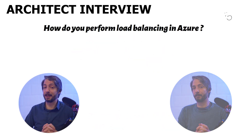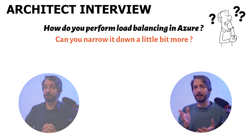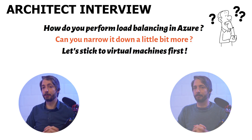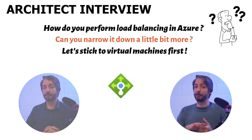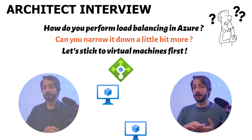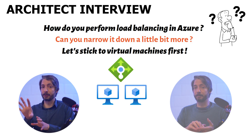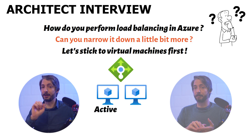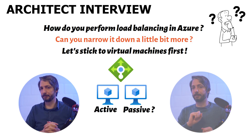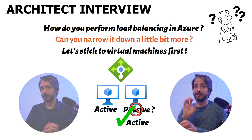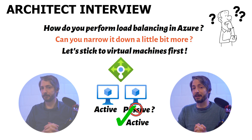How would you perform load balancing? Can you narrow it down a bit — is it a web application, or are there VMs you need to load balance? Let's stick to virtual machines first. There's Azure Load Balancer, which works on Layer 4 and distributes connections. You can put your virtual machines behind an Azure Load Balancer to distribute the load. So, you're able to configure two virtual machines behind a load balancer — one active and one passive, correct? No — Azure Load Balancer only supports active-active configuration. For active-passive configuration, there are other options such as Azure Traffic Manager and Azure Front Door.